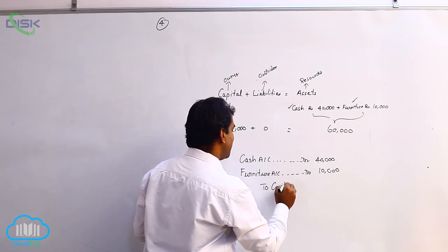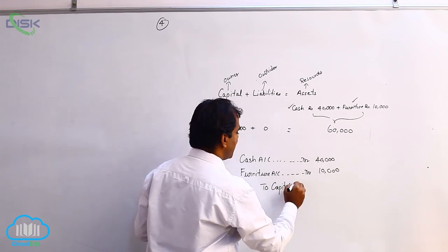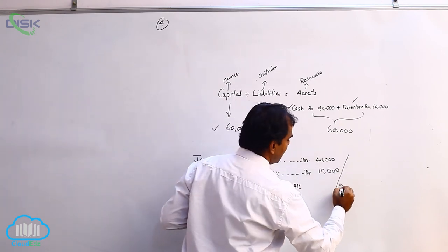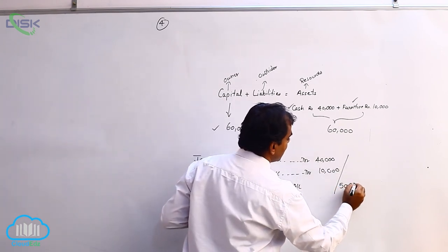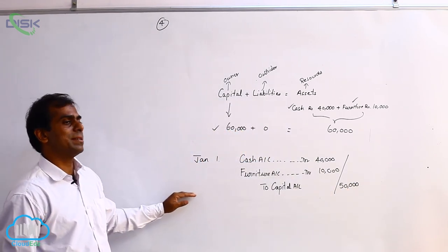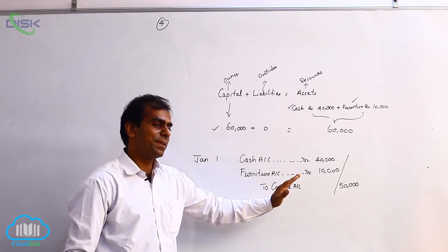So we are crediting capital which represents owner. So the total is 60,000. You can say your narration being business commenced with cash and furniture.